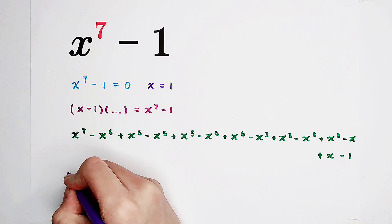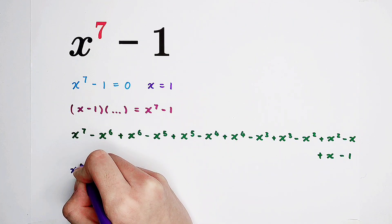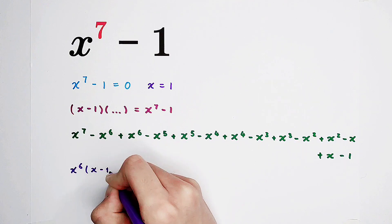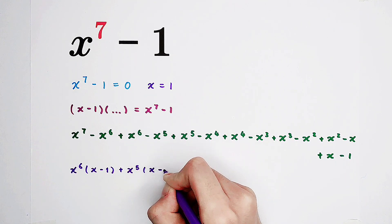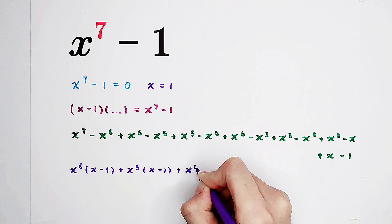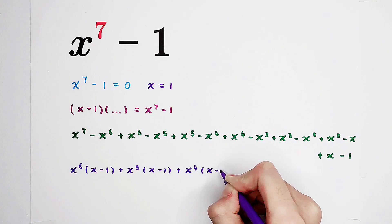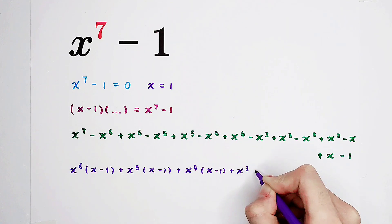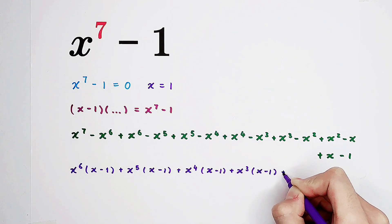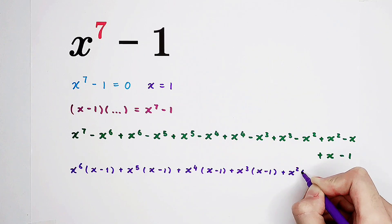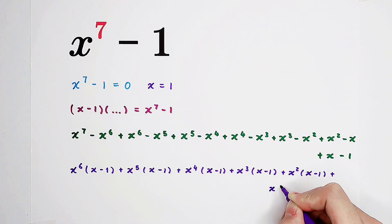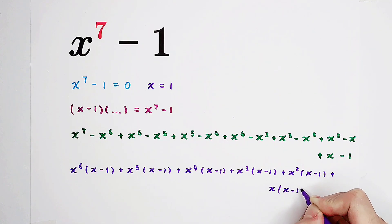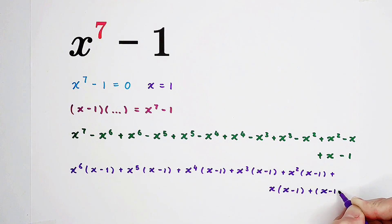The next step will be very long — patience, patience. Take out x to the power of 6; it gives x minus 1 in the bracket. Here, x to the power of 5 gives x minus 1 in the bracket. x to the power of 4 gives x minus 1 in the bracket. x to the power of 3 gives x minus 1 in the bracket. x squared gives x minus 1 in the bracket. Here x gives x minus 1 in the bracket. And here just x minus 1. So now, x minus 1 can be taken out!